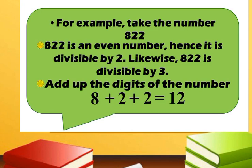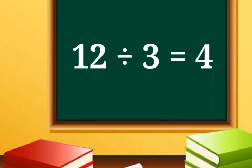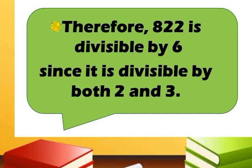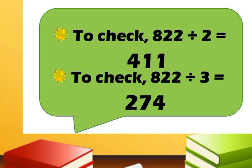Let us take the number 822 for example. 822 is an even number, hence it is divisible by 2. Likewise, 822 is divisible by 3 — by adding the digits: 8 plus 2 plus 2 equals 12, and 12 is divisible by 3 because 12 divided by 3 equals 4. Therefore, we can say that 822 is divisible by 6 since it is divisible by both 2 and 3. To check: 822 divided by 2 equals 411, and 822 divided by 3 equals 274.